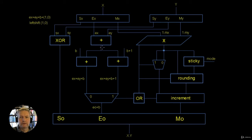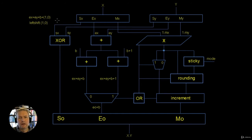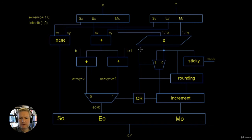We know we have to add those together, so we've put them into a summer. At the output we take a copy of EX plus EY going one way, and another copy going the other way. We're going to put them into a couple of summers. The reason for this is that the output exponent is going to be EX plus EY plus our bias plus a value of 1 or 0. That 1 or 0 is determined by the 48th bit of the multiplication.